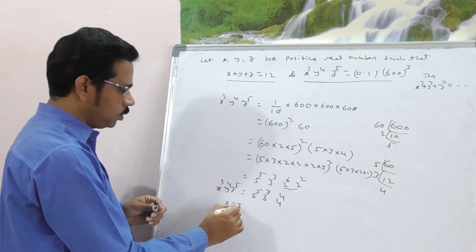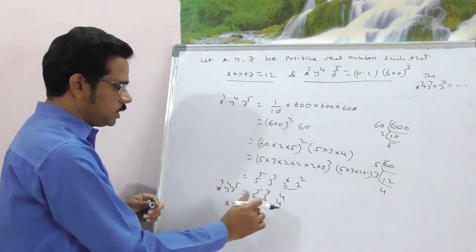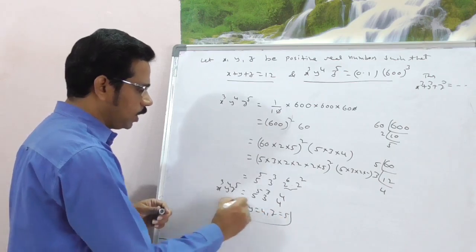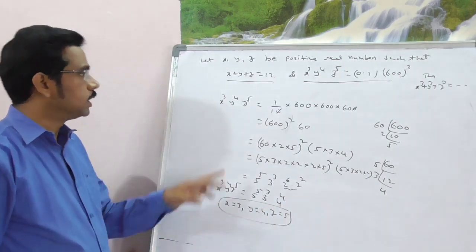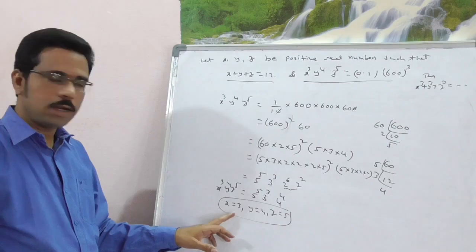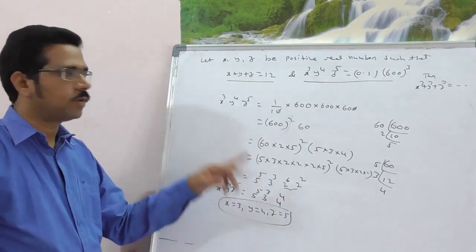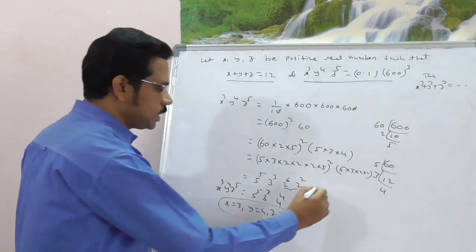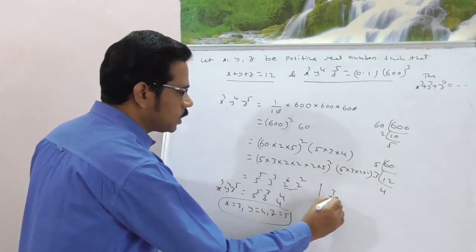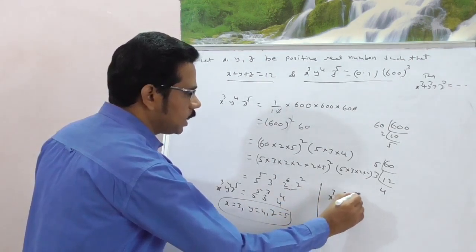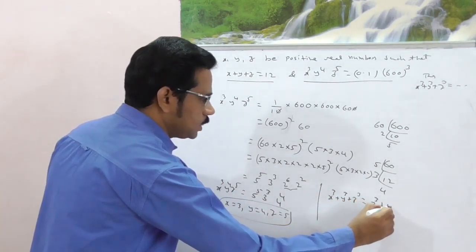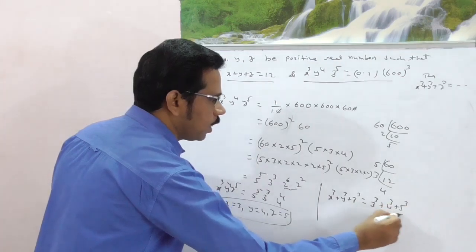Now clearly x cube, x is equal to 3. What is y? y is equal to 4. What is z? z is equal to 5. Clearly x plus y plus z, that is equal to 12. Clear? 3 plus 4, 7 plus 5, 12. Now finally, what do you have to calculate? x cube plus y cube plus z cube. Now clearly, x cube plus y cube plus z cube is equal, you can write it as 3 cube plus 4 cube plus 5 cube.